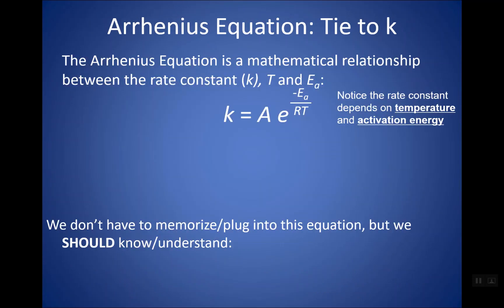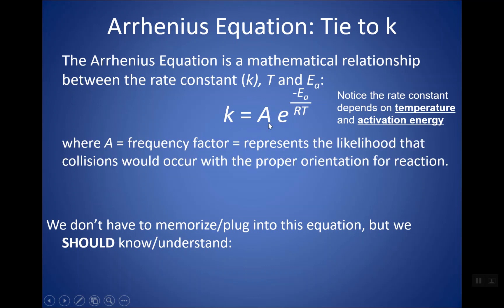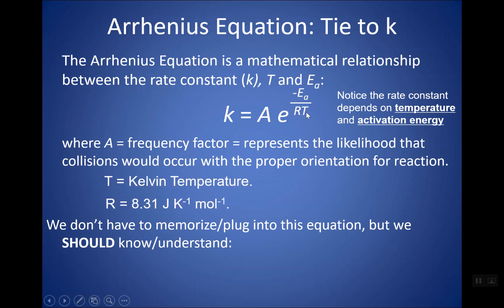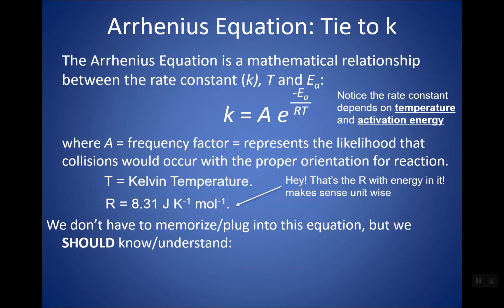There's an equation called the Arrhenius equation. It's been taken off the AP exam and is not on your formula sheet — you don't need to memorize or plug into it. But you should understand its implications. Your rate constant K depends on: A, a frequency factor representing the likelihood collisions occur; and the term e raised to the exponent of negative activation energy (Ea) divided by R, the ideal gas constant, times T in Kelvin. The R here has units of energy, which is why that version of R is on your formula sheet.